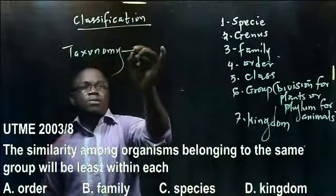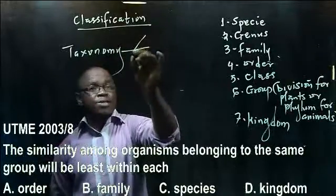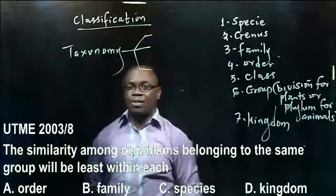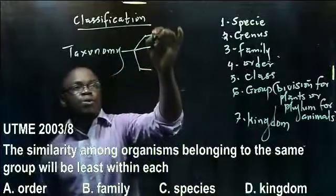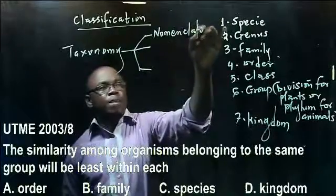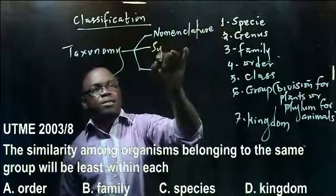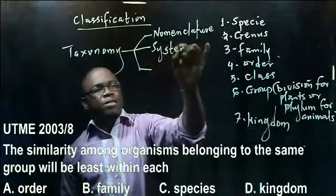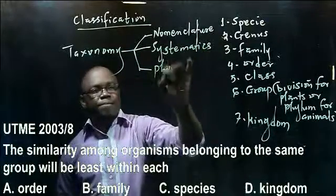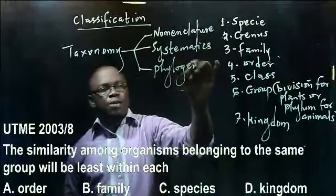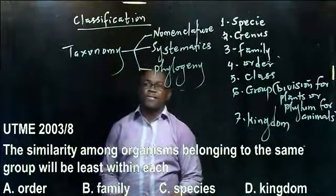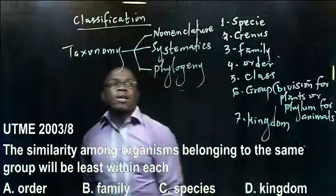Taxonomy has several branches. Three key branches are: nomenclature, systematics, and phylogeny. These are some of the key branches of taxonomy, which is the science of classification.